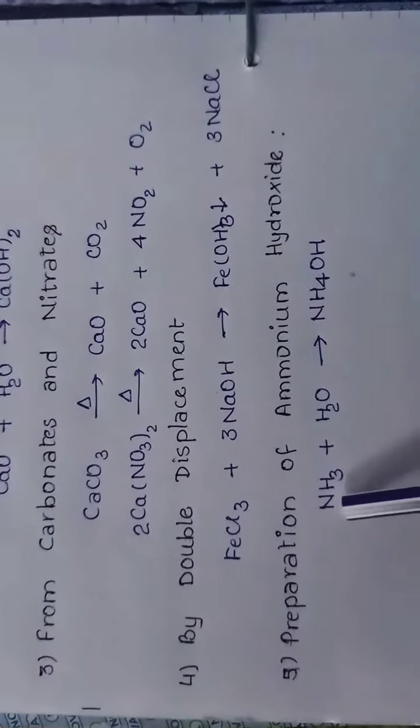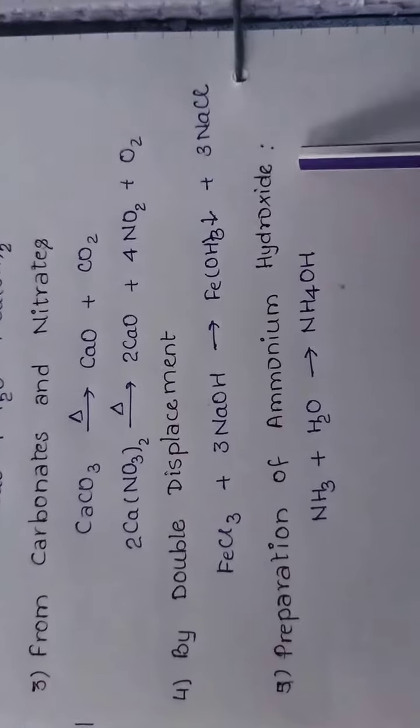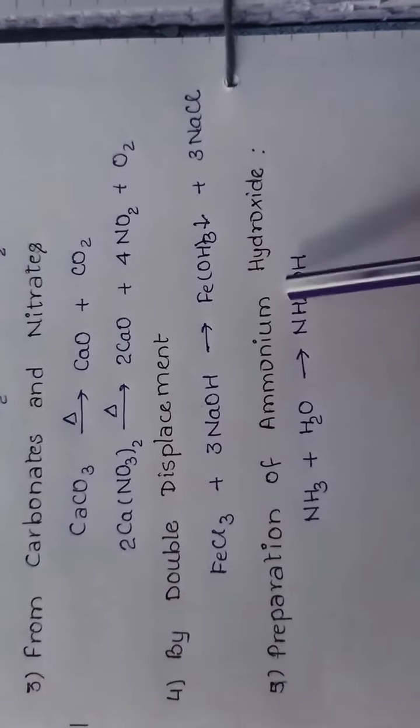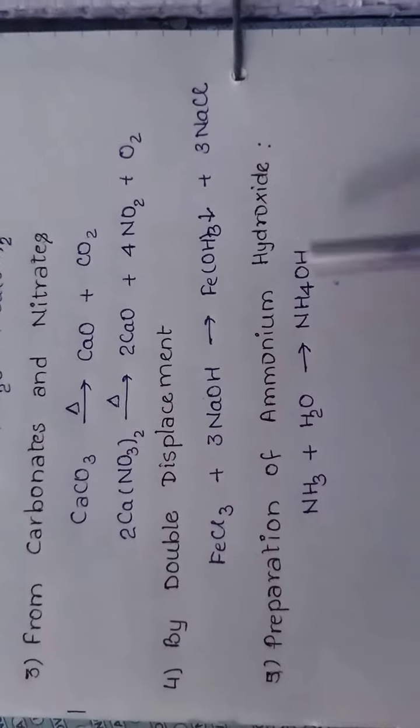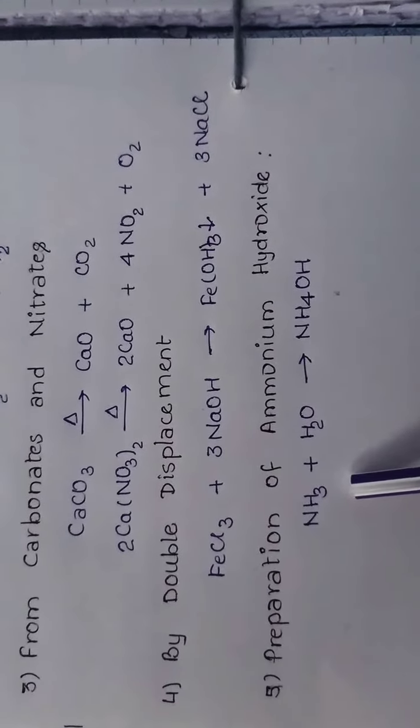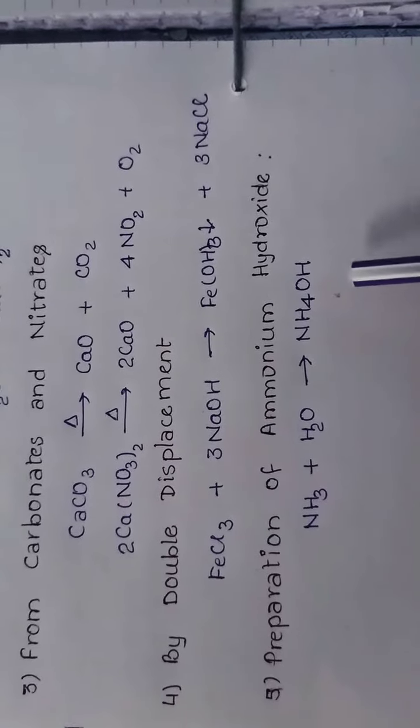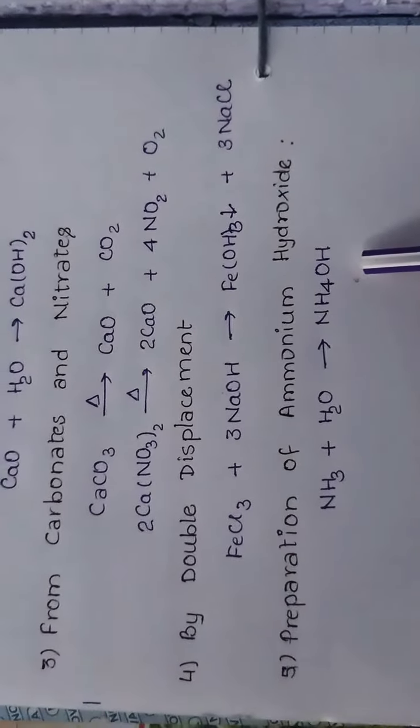Fifth method is preparation of ammonium hydroxide. How to prepare ammonium hydroxide? For the preparation, we take ammonia gas. When ammonia gas reacts with water, it gives ammonium hydroxide.